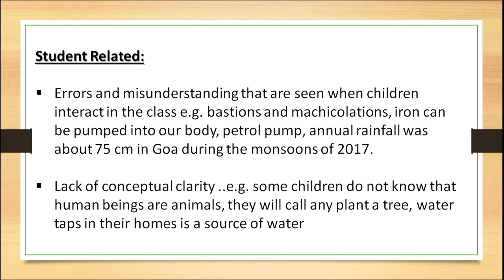There is also a lack of conceptual clarity. Some children do not know that human beings are animals — if you ask them for examples of animals, they will name elephants, tigers, jackals, cats, and dogs, but not human beings. We are animals, but we are different: we are rational and social. Another conceptual issue is that whenever children see any plant, they call it a tree, or vice versa. All are plants, but categorization gives us trees, herbs, climbers, palms, and shrubs.